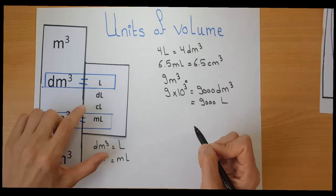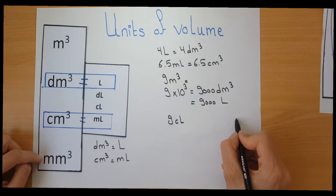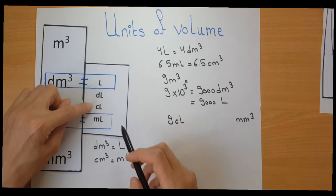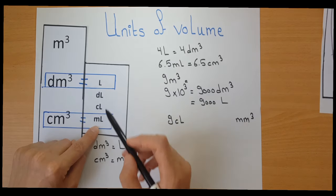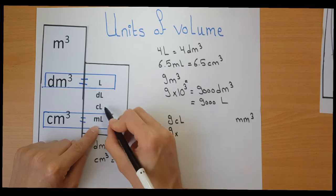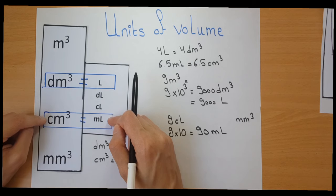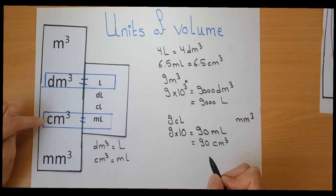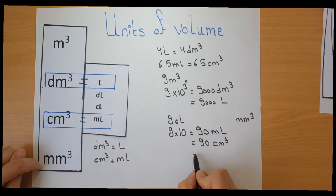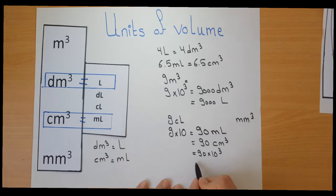Let's take another example: I have nine centilitres and I want to convert it to millimetre cube. First, convert centilitres to millilitres — going down one step, multiply by 10 — giving 90 millilitres. Since millilitre equals centimetre cube, that's 90 centimetre cube. Finally, convert centimetre cube to millimetre cube by multiplying by 10 to the power of 3, one step down, giving 9 times 10 to the power of 4 millimetre cube. That's how we convert between different units of volume.